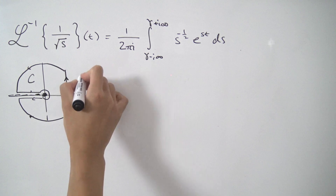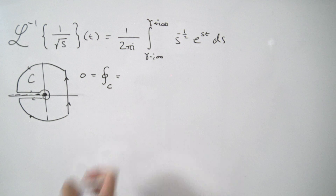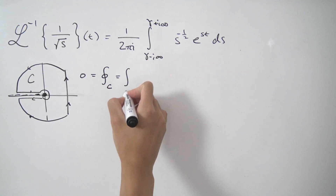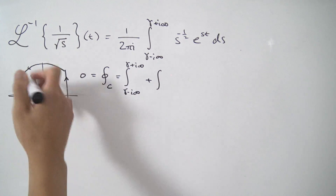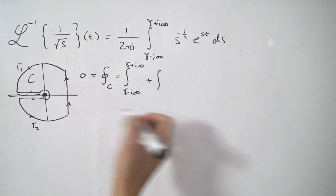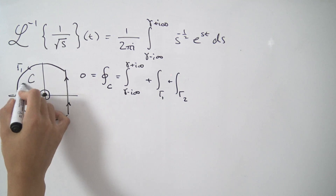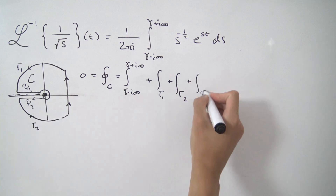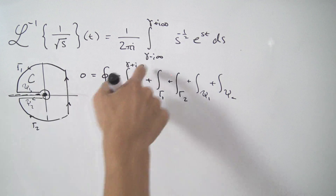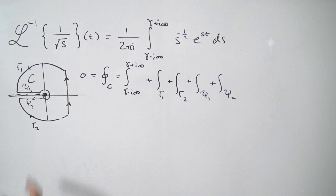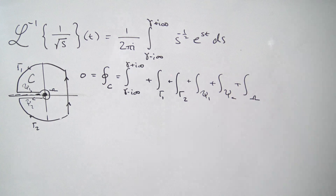We know the integral over C is 0, and we can decompose it over a bunch of paths. We have the integral from γ−i∞ to γ+i∞, plus the integrals over the arcs γ₁ and γ₂, plus the integrals along the upper and lower paths ψ₁ and ψ₂, plus the integral over the small loop ω around the branch point. So: integral over C = integral along the vertical line + integral over γ₁ + integral over γ₂ + integral over ψ₁ + integral over ψ₂ + integral over ω = 0.